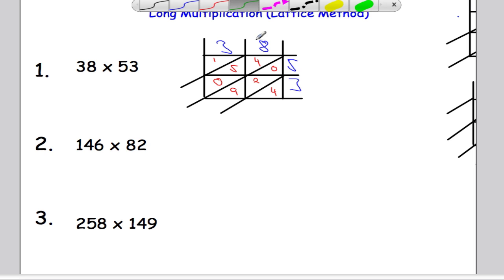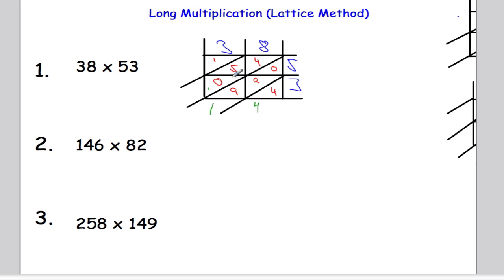Now what we do is just add up all of these diagonals. We're going to start from the bottom right and work our way around. We've just got 4 on its lonesome there, so just 4. 9 and 2 is 11 and 0 is still 11 — put the 1 there and carry that extra 1 over. 4 and 5 is 9, 9 and 1 is 10 — put down the 0 and carry the 1. 1 and 1 is 2. And our answer is read like this: 2, 0, 1, 4 — 2,014. Zero hundreds and 14: 2014.